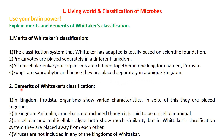Now moving to the demerits - disadvantages of Whittaker's classification. In kingdom Protista, organisms show varied characteristics, yet in spite of this they are placed together. Next, in kingdom Animalia, Amoeba is not included though it is said to be a unicellular animal - it is placed in Protozoa instead. Unicellular and multicellular algae both show much similarity, but in Whittaker's classification they are placed away from each other. And viruses are not included in any of the kingdoms of Whittaker.